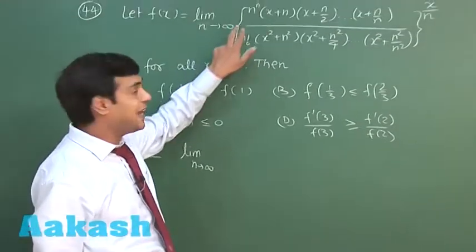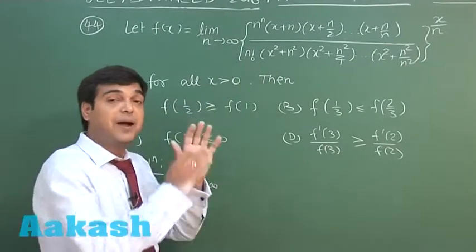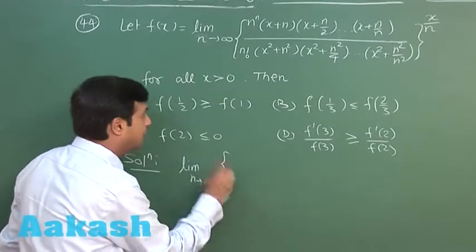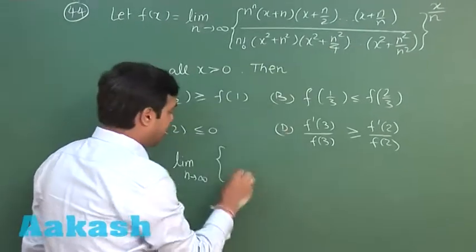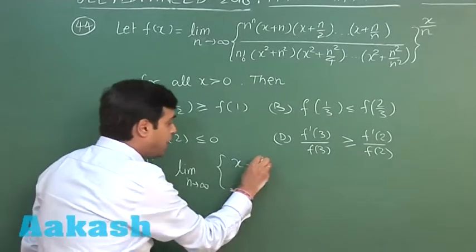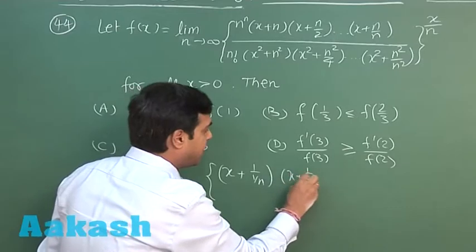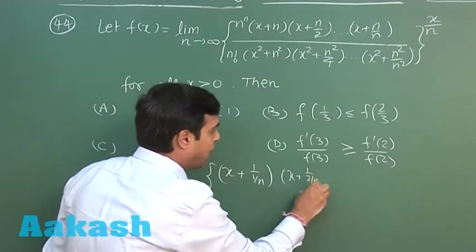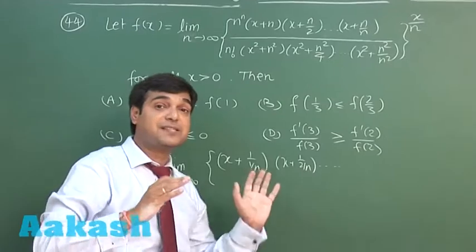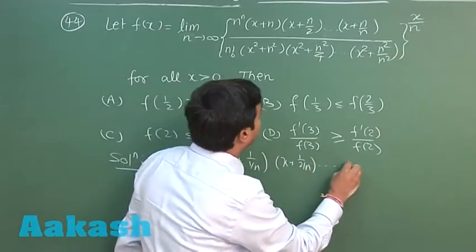The n^n term in the denominator can be absorbed by writing 1·2·3·...·n in the denominator. Each of the terms can then be written in the form (x + r/n) or (1 + r/n) form, to bring them into a summation suitable for conversion to a Riemann integral.